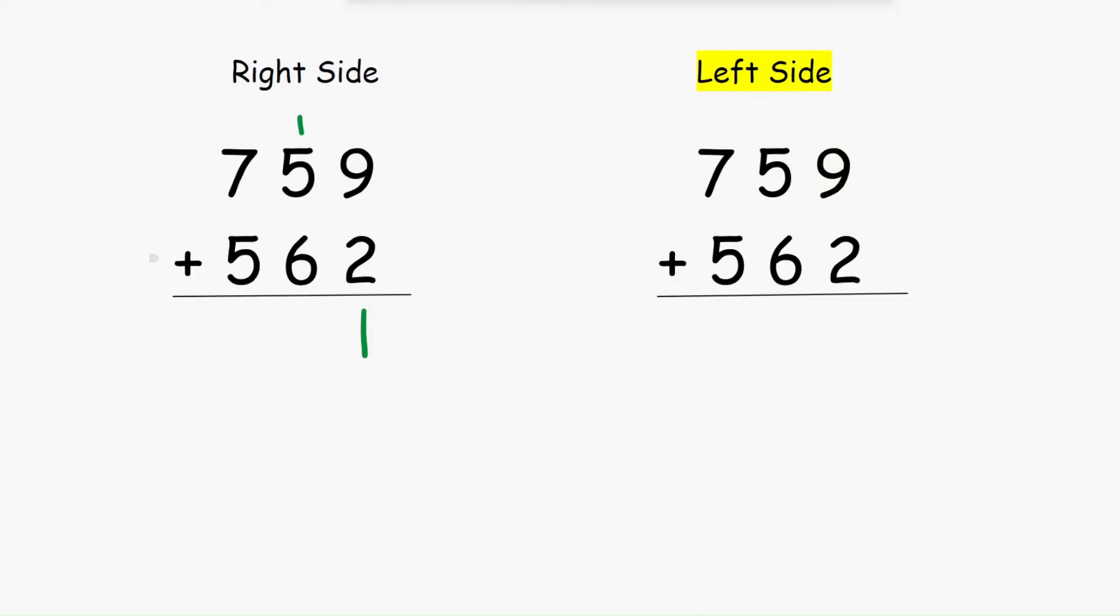1 plus 5 equals 6, 6 plus 6 equals 12, keep 2 here and carry 1. 1 plus 7 equals 8, 8 plus 5 equals 13. In Vedic maths, we will do from the left side.